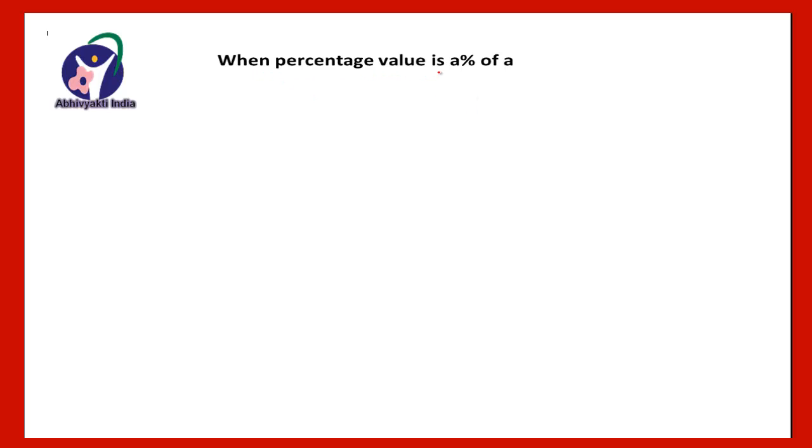Now, another is when percentage value is A% of A, just like 30% of 30, 40% of 40. If you take 40% of 40, what you get: 4 times 4 is 16, 1600, decimal point will be after 2 digits, so definitely it will be 16. Similarly, 30% of 30, that will be equal to 3 times 3 is 9, that is 900, and a decimal point after 2 digits. So you will get 9. So 40% of 40 is 16, 30% of 30 is 9.